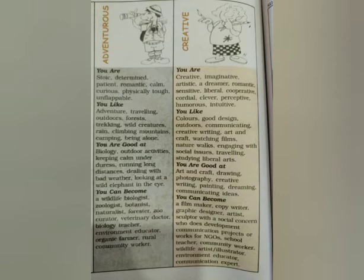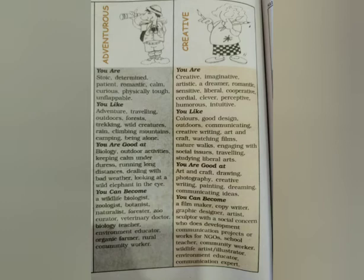If you are creative, you will be good at art and craft, drawing, photography, creative writing, painting, dreaming, and communicating ideas. You can become a filmmaker, copywriter, graphic designer, artist, sculptor with a social concern — meaning you are concerned about society and express that through your work — or someone who does development communication projects or works for NGOs. NGOs means non-governmental organizations, where you work free of cost to help people. You could also become a school teacher, community worker, wildlife artist, illustrator, environment educator, or communication expert.